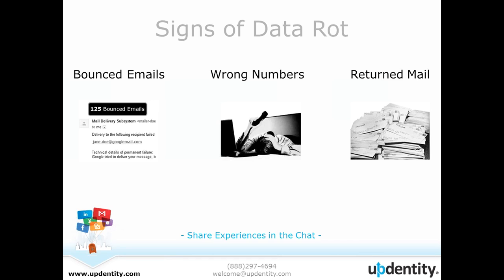Another example of data rot is return mail. Return mail can be a particularly costly form of engagement for a nonprofit. If you're sending out an item like an annual report that may have many pages, it can be really costly to create and distribute, especially if you end up with a lot of return mail. Some organizations may be relying on return mailings to get updated addresses, but you need to take into consideration the cost associated with each piece of mail created in addition to postage costs. If it's a return, it's basically like throwing that donor money into the trash can.